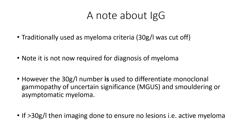A quick note about the immunoglobulin number. Traditionally, immunoglobulin level was used as a myeloma criterion — the magic number was 30. Less than 30 was not myeloma, above 30 was. Thinking back to the SLIM-CRAB criteria, it's not necessarily required for a myeloma diagnosis to have immunoglobulin above 30. However, the 30 g/L number is still used to differentiate MGUS and smouldering myeloma. If it's more than 30 g/L with no symptoms and no end organ damage, you'd want imaging to ensure there are no lesions, as you might be looking at myeloma defining disease requiring treatment.